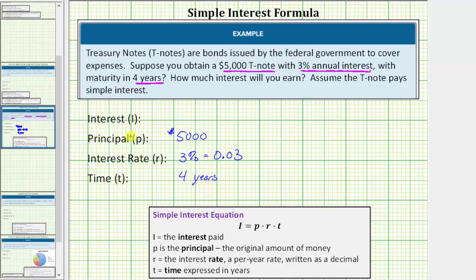We're trying to determine the interest earned, and therefore the unknown is I. Using our formula, we have the interest I is equal to P, the principal of 5,000.